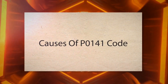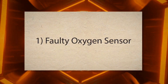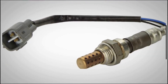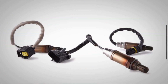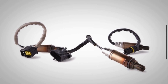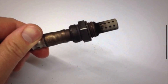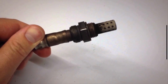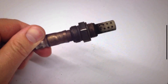Causes of PO-141 code. 1. Faulty Oxygen Sensor: Oxygen sensors are exposed to extreme conditions within the exhaust system, including high temperatures and corrosive gases. Over time, this exposure can cause the sensor to degrade or become contaminated with deposits from the exhaust gases. When this happens, the sensor may not accurately measure the oxygen levels in the exhaust, leading to a fault code like PO-141.